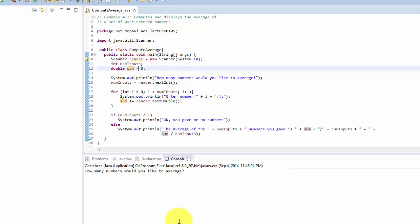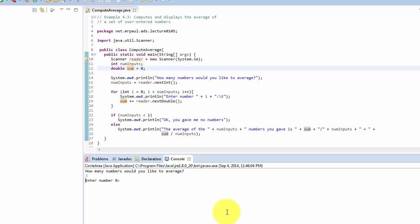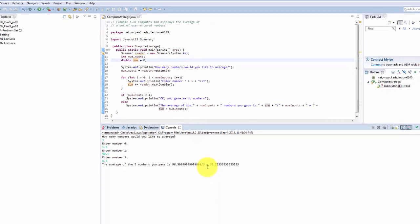Let's run this again. We'll enter in three numbers this time: 1.6, 90.5, and 4.3. The average of the three numbers you gave me is 96.399999 divided by 3, which is 32.1333333. There's more formatting we could do, but for our purposes, this is doing what we need. Fantastic.